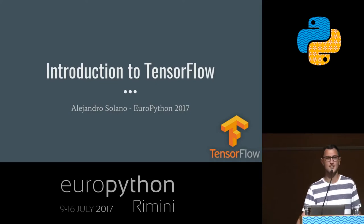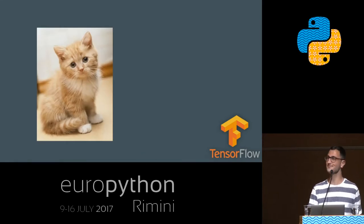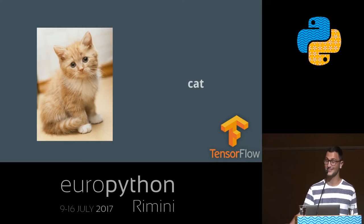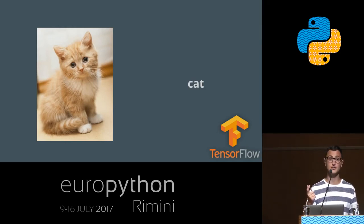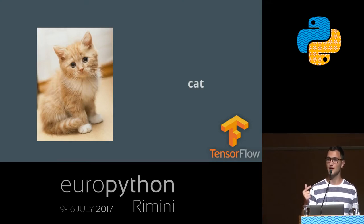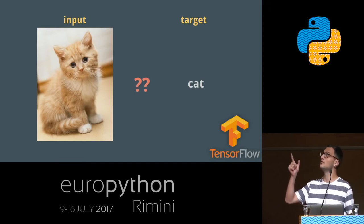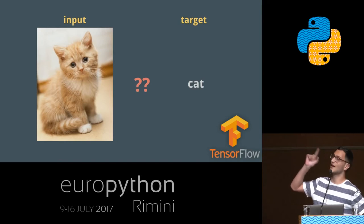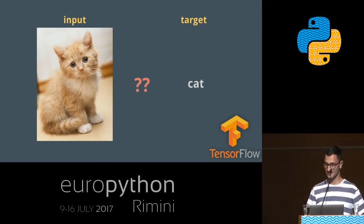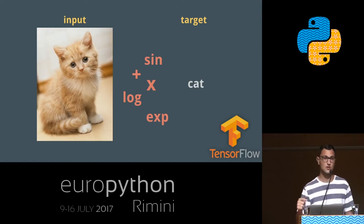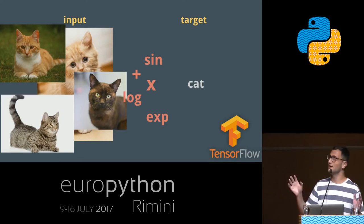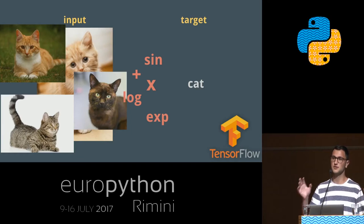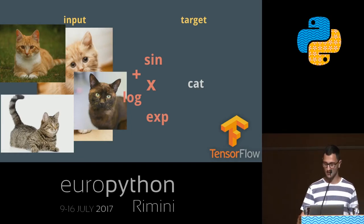Introduction to TensorFlow. Let's start with a question: what is this? It's a cat. That was an easy question. But is that easy for a computer? A computer is a machine that makes computations with mathematical operations. So the real question is: is there a mathematical relationship between this input — an image of a cat — and the target, a class 'cat'? The answer is yes, but it's very complex. And we're going to learn this complex relationship using tons of examples. Learning a very complex relationship using tons of examples is a fairly good first definition of deep learning.